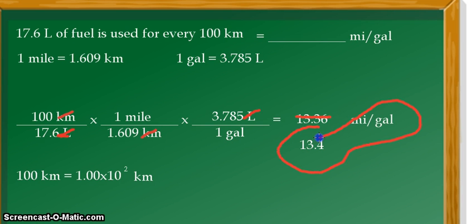Alright, and remember, don't forget your units. So it means that 17.6 liters of fuel being used for every 100 kilometers is equal to 13.4 miles per gallon fuel efficiency. Alright, so that is all for this example. Thank you for listening and continue learning.